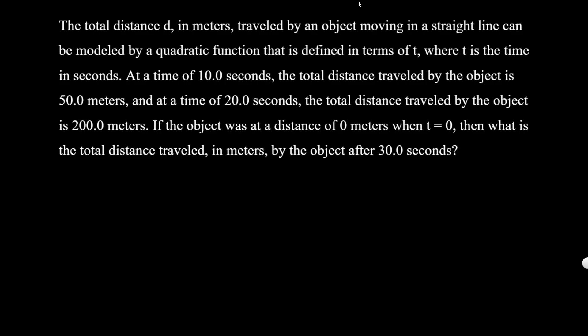You may pause the video and try this by yourself first. The total distance d in meters traveled by an object moving in a straight line can be modeled by a quadratic function. So the model itself is a quadratic function of t, where t is time in seconds.